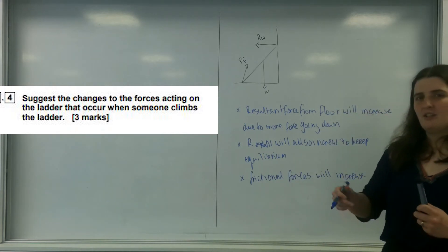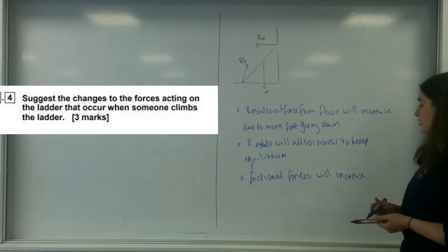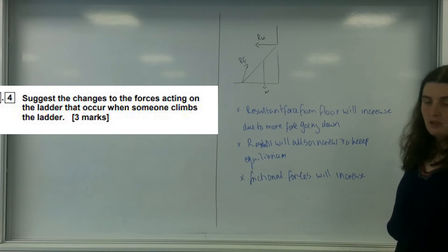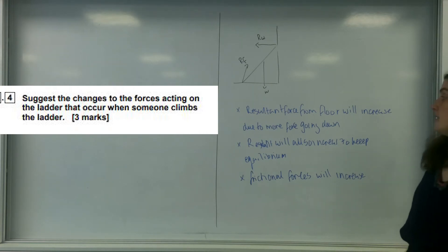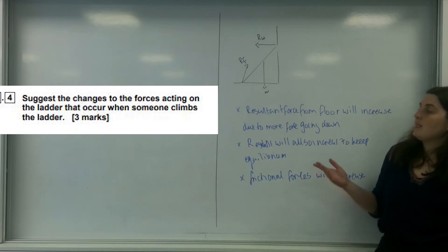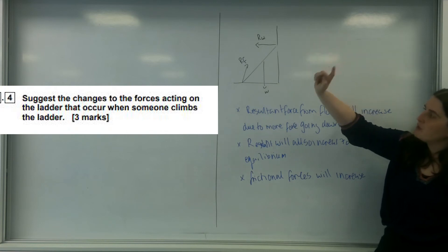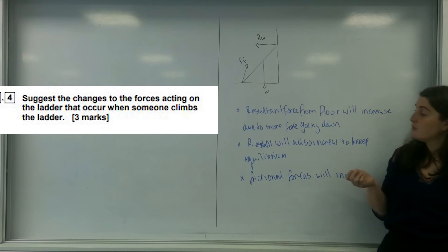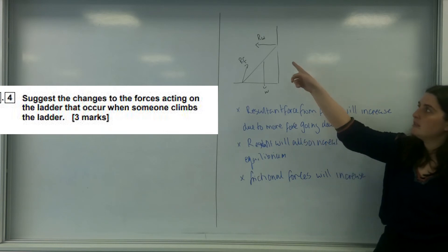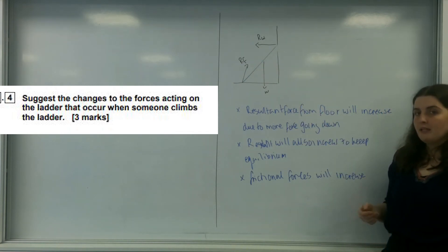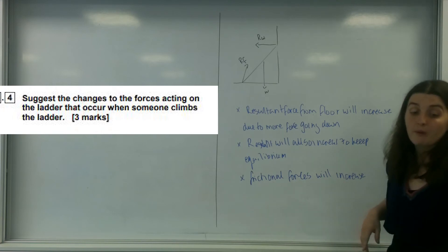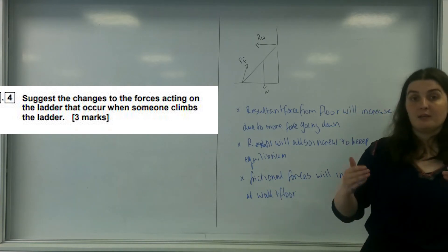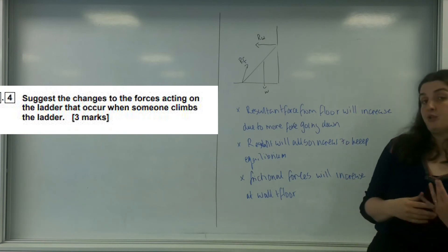And this is to make sure it actually stays there. If you think about it, as you climb up a ladder, you can hear the ladder grate against the wall — so the frictional force is being increased. The question was: suggest the changes to the forces acting on the ladder. The two biggest changes are what happens to the resultant of the wall and the resultant of the floor. The resultant of the floor increases to keep equilibrium; the resultant of the wall also increases; and the frictional forces will likely increase at both the wall and the floor. That is question five from paper one.